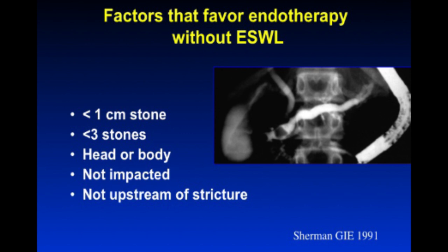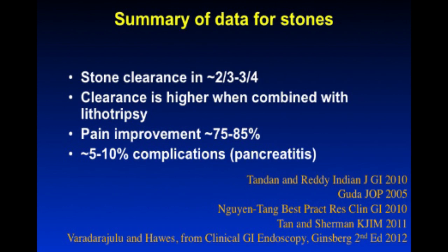In a meta-analysis of about 600 patients, ESWL was relatively effective at both pain relief and duct clearance. If you're unsure whether you can tackle a stone — whether you need ESWL or lithotripsy — there are favorable features on pancreatogram or MRCP that may suggest standard therapy without lithotripsy will suffice. Stone clearance is achieved in two-thirds to three-quarters of patients, higher when combined with ESWL. Pain improvement is impressive at 75% to 85%, with a mild to moderate complication rate, primarily pancreatitis.